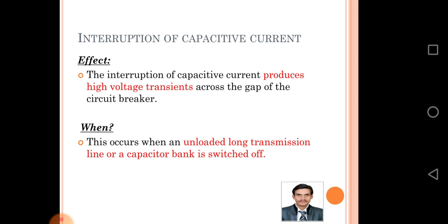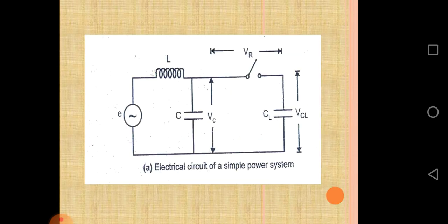Interruption of capacitive current — this electrical circuit represents a simple power system.